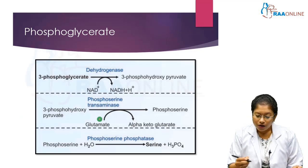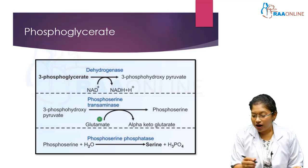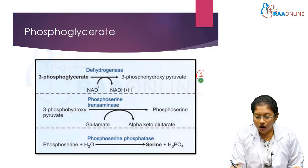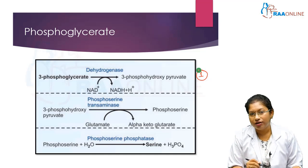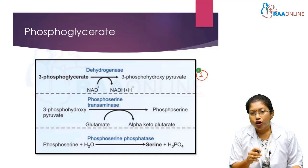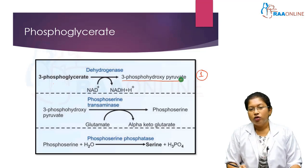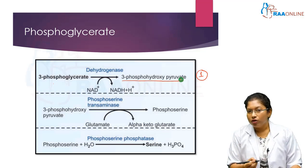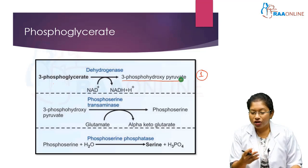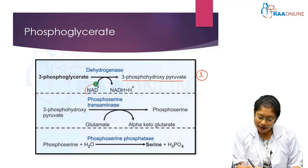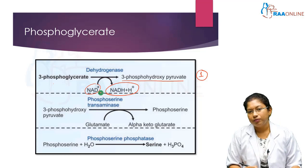For the first reaction from 3-phosphoglycerate, there are three steps. The first step is a dehydrogenase reaction - you oxidize 3-phosphoglycerate to 3-phospho-hydroxypyruvate. The parallel reduction converts NAD+ to NADH + H+. The enzyme is dehydrogenase.